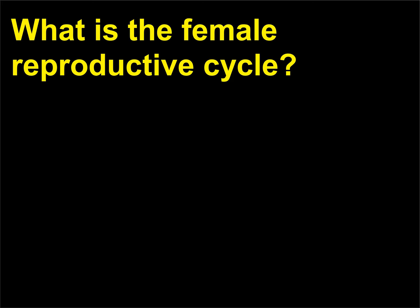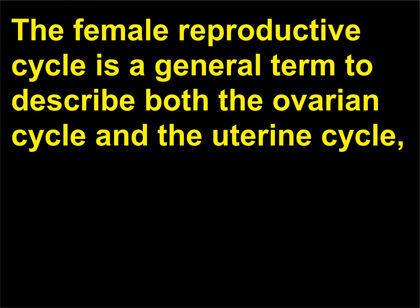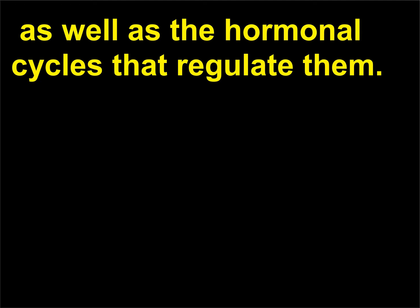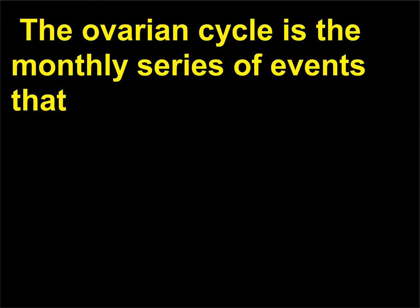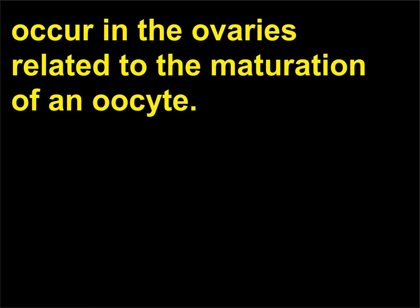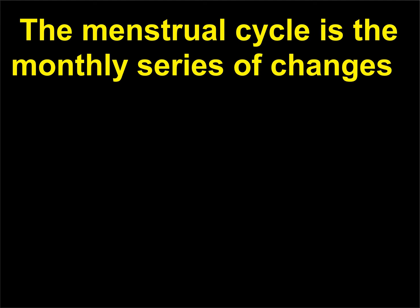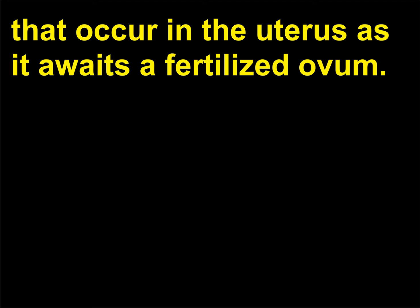What is the female reproductive cycle? The female reproductive cycle is a general term describing both the ovarian cycle and the uterine cycle, as well as the hormonal cycles that regulate them. The ovarian cycle is the monthly series of events that occur in the ovaries related to the maturation of an oocyte. The menstrual cycle is the monthly series of changes that occur in the uterus as it awaits a fertilized ovum.